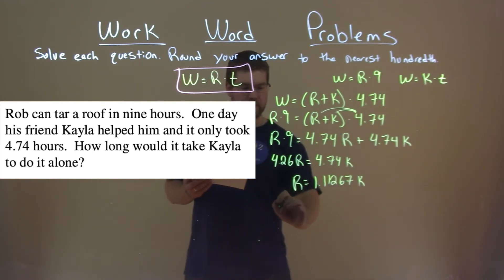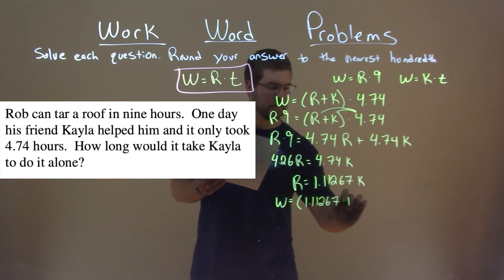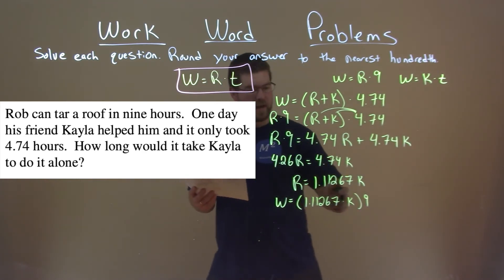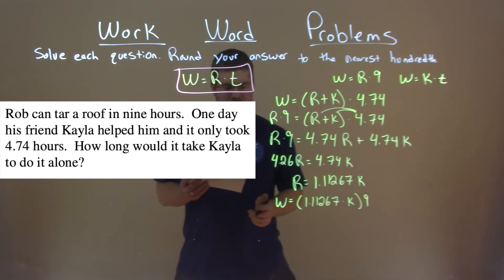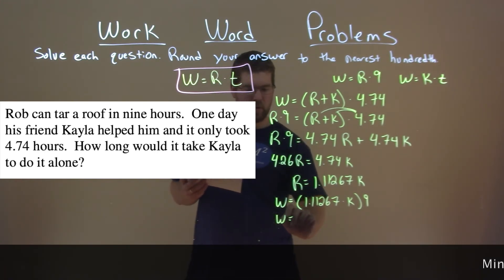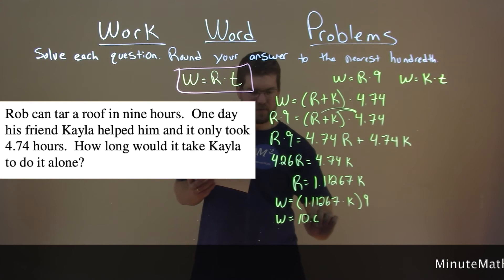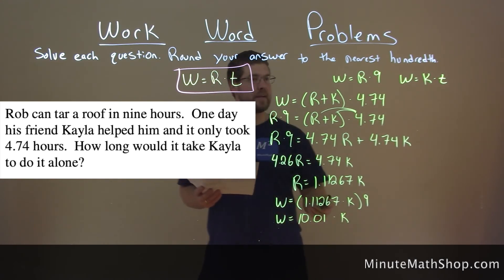Our work is equal to r, which is 1.11267 times k, times 9. Multiply that 9 times 1.11267, and we have work equals 10.01 times k's rate.